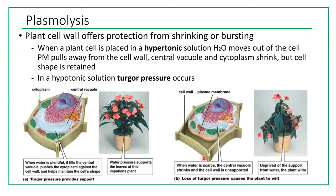Here's the cell membrane or plasma membrane, and here's the cell wall as an additional structure. The cell wall protects cells from shrinking or bursting. When a plant is placed in hypertonic solution, water moves out of the cell, the plasma membrane pulls away from the cell wall, and the central vacuole and cytoplasm shrink — but the cell shape is retained because of the cell wall. This also decreases the turgor pressure, which is the outward pressure against the cell wall.